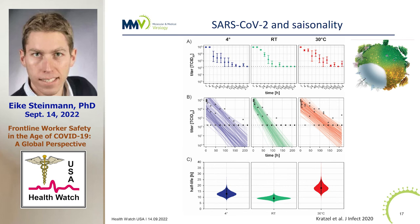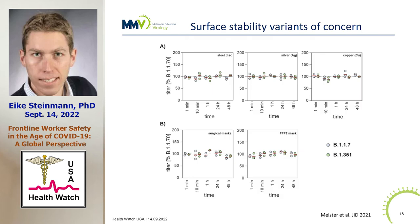We also had a study with soap and variants of concern, where we asked whether the variants of concern show different surface survival. This was not the case — compared to the Wuhan strain, the Alpha and Beta variants on stainless steel and on surgical masks showed the same stability and comparable stability. There were no differences. None of the variants is now much more stable compared to another SARS-CoV-2 variant.